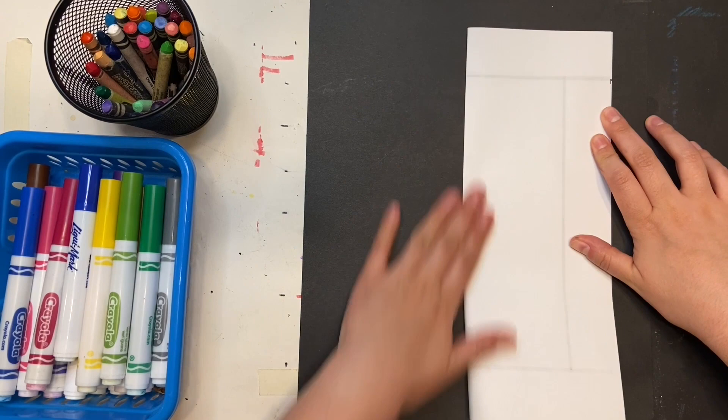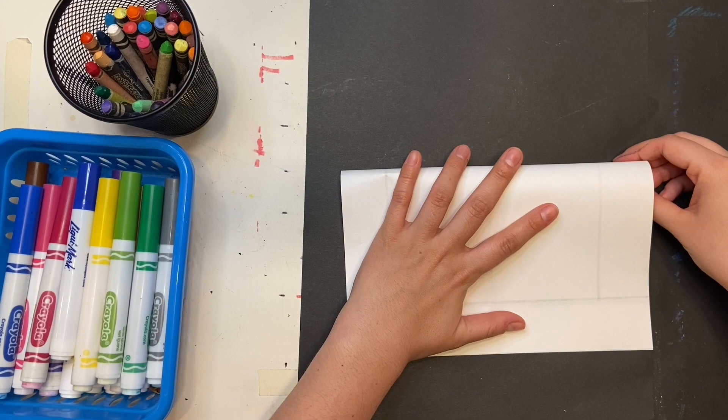Fold your paper into fourths by folding it twice. This will give you guidelines for when we draw the silhouette outline.